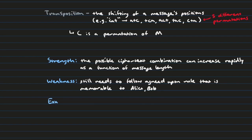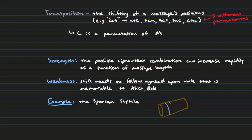One of the earliest examples of a transposition cipher was done by the Spartans, known as the Scytale, where they take a stick of a fixed width and wrap a cloth around it with their secret message. The only way to unscramble the message is by having another stick at the other location with the same width. Otherwise, what you get when you wrap it around a different stick is a jumble of letters that's incoherent.